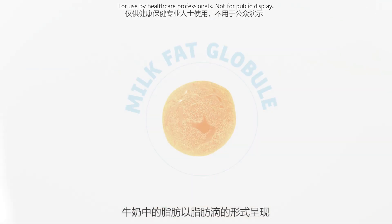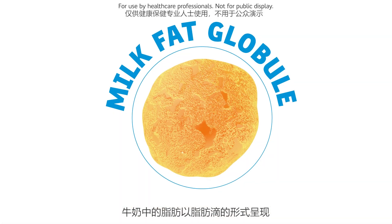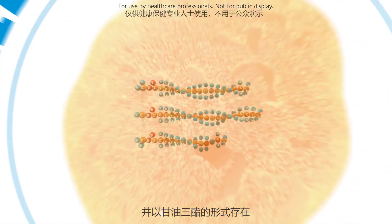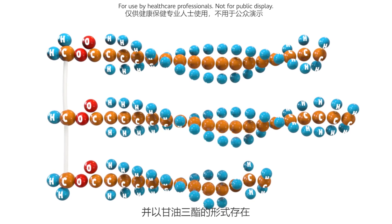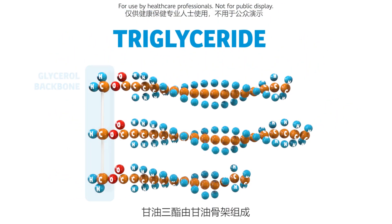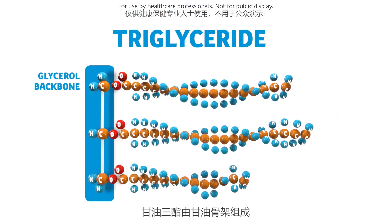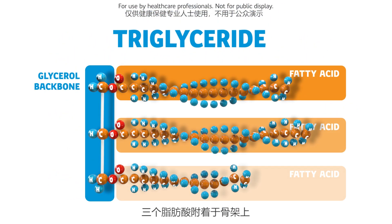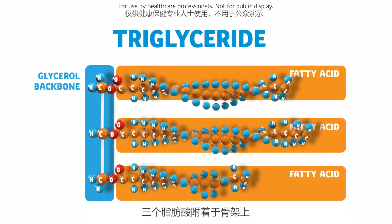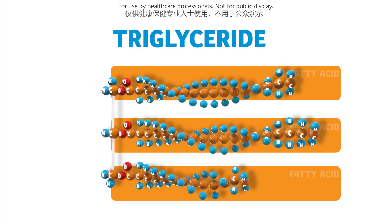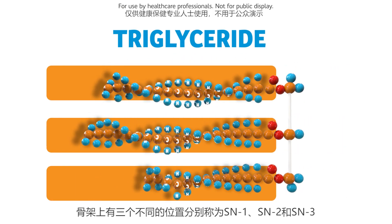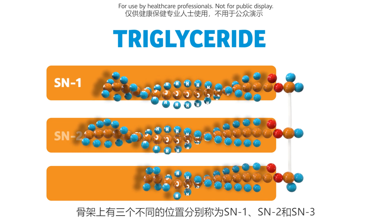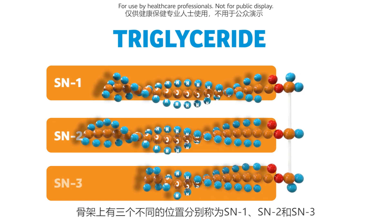Fat in milk is present in droplets, inside which triglycerides are present. Triglycerides consist of a glycerol backbone with three fatty acids attached to it. The three different positions on the backbone are called SN1, SN2, and SN3.